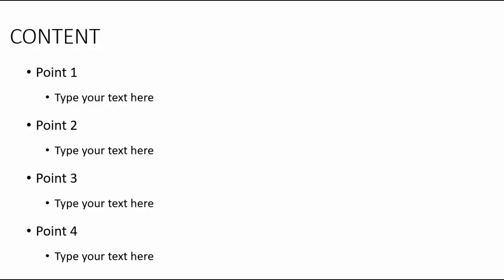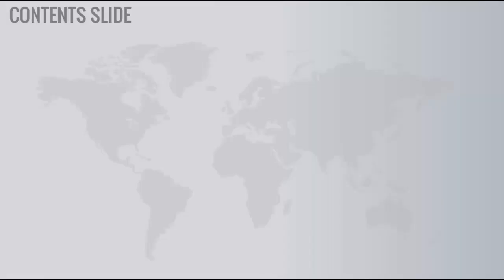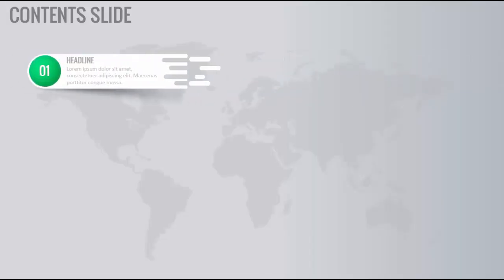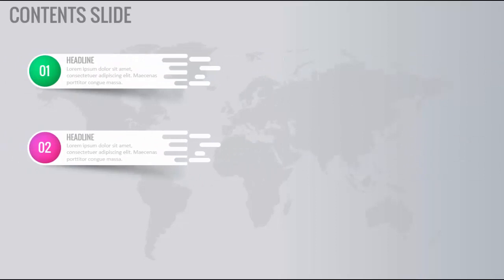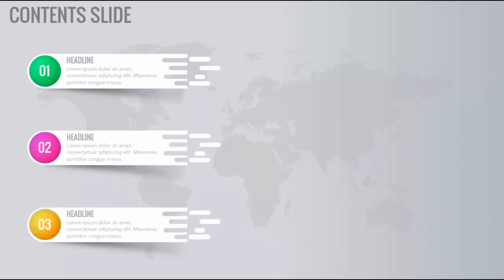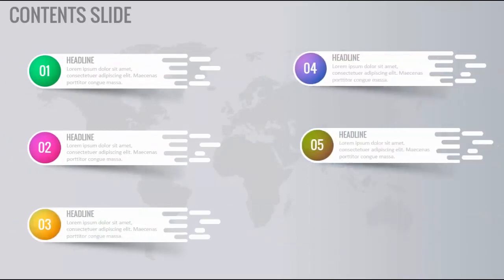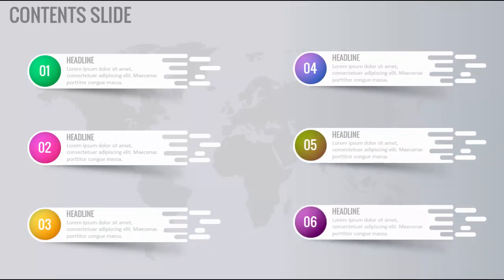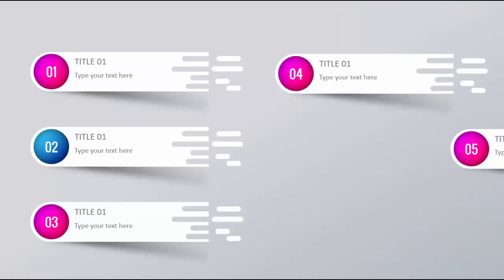That's our content slide. So instead of creating this kind of very simple and ineffective slide, I thought of creating something like this. This is the content slide — it will show you the first headline or title, the second, third, fourth, fifth, and sixth. You can see the difference between slide one and slide two. Apart from that, I've made one more which is something like this.